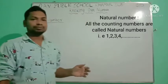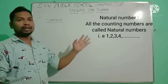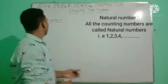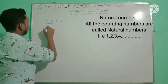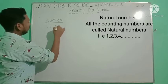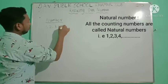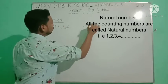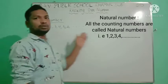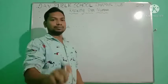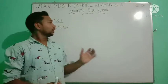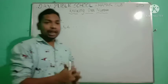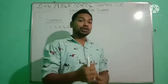So what are natural numbers? Like 1, 2, 3, 4, 5, 6, 7, 8, 9, 10 — these are the numbers we use for counting.